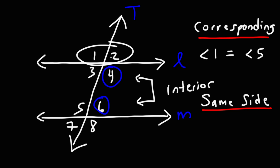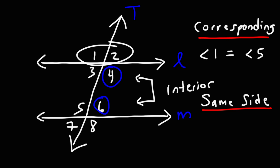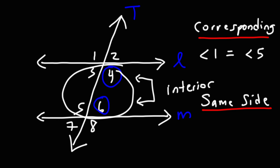Angles 1, 2, 7, and 8 are known as exterior angles — they're outside of the two parallel lines. But angles 3, 4, 5, and 6 are called interior angles because they're on the inside of the two parallel lines.